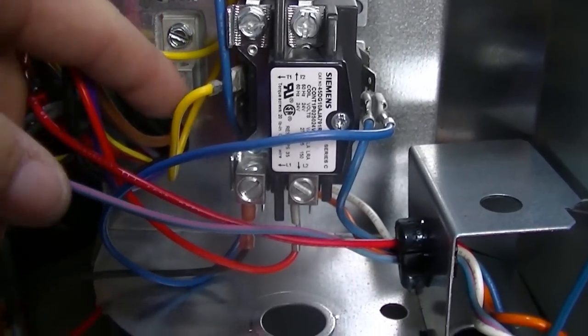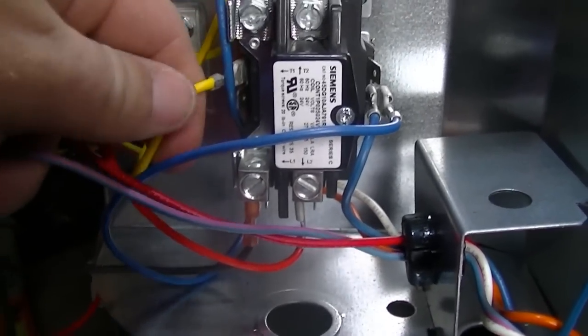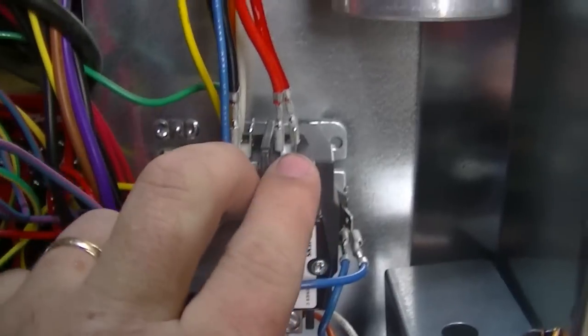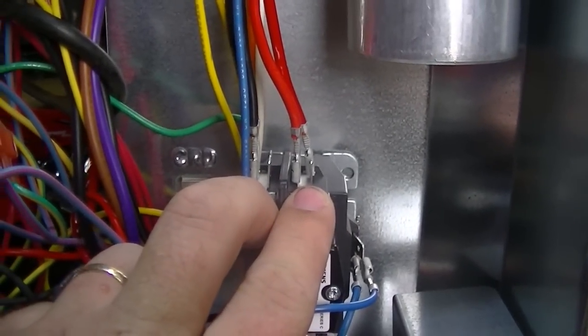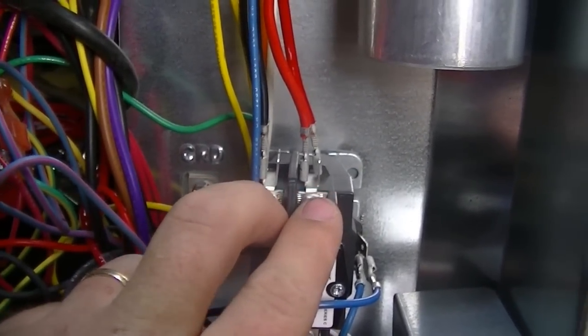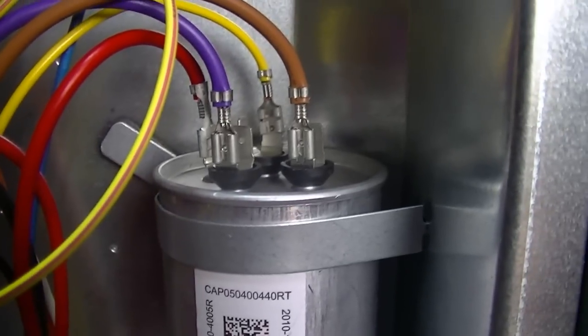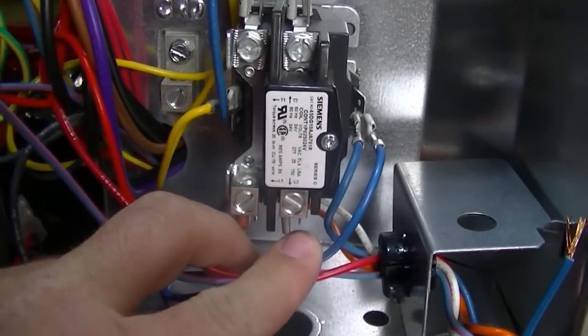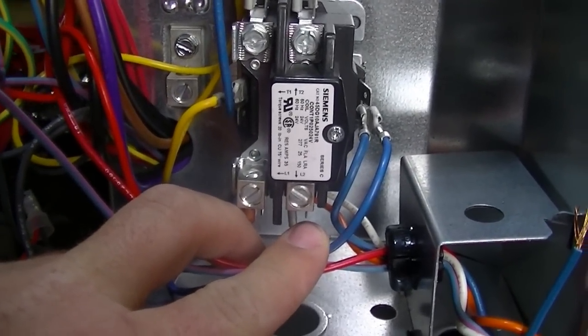If those switches say everything's all right, basically they're closed, it'll make it down here, energize the contactor, send power to the outdoor fan motor and the compressor. And as long as the components are good and the dual run capacitor is good, they will start. And that is the single pole contactor. Pretty common.